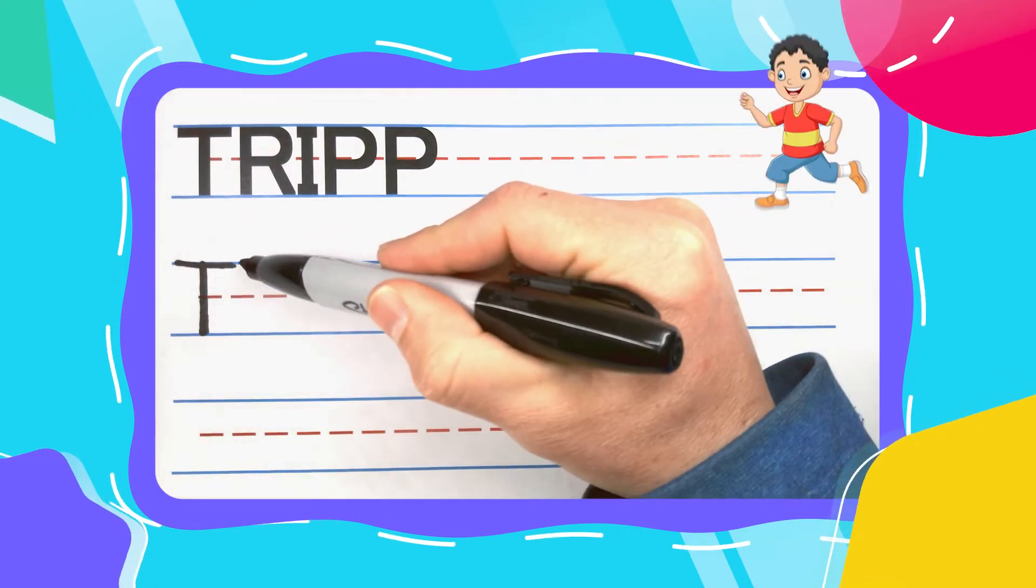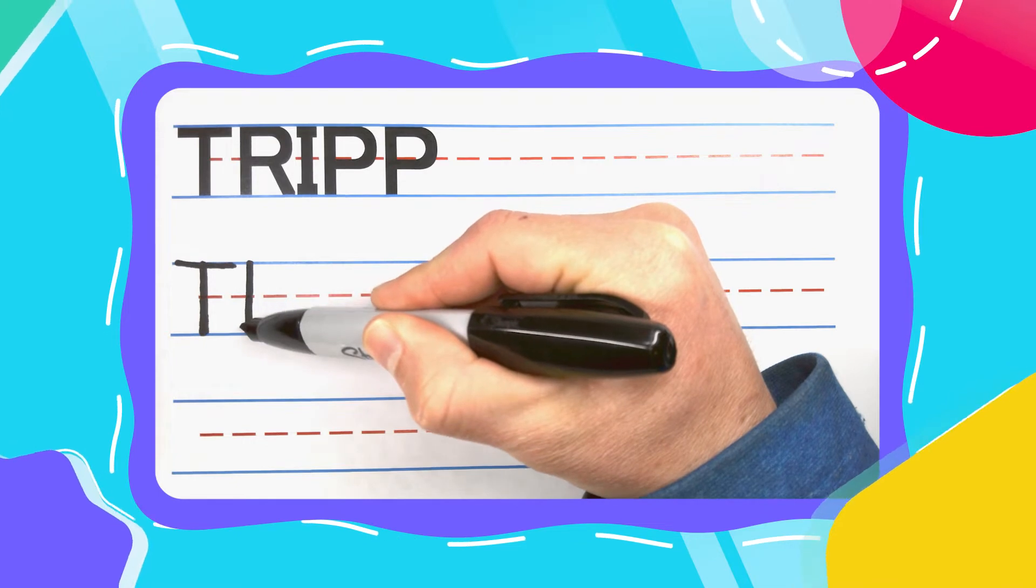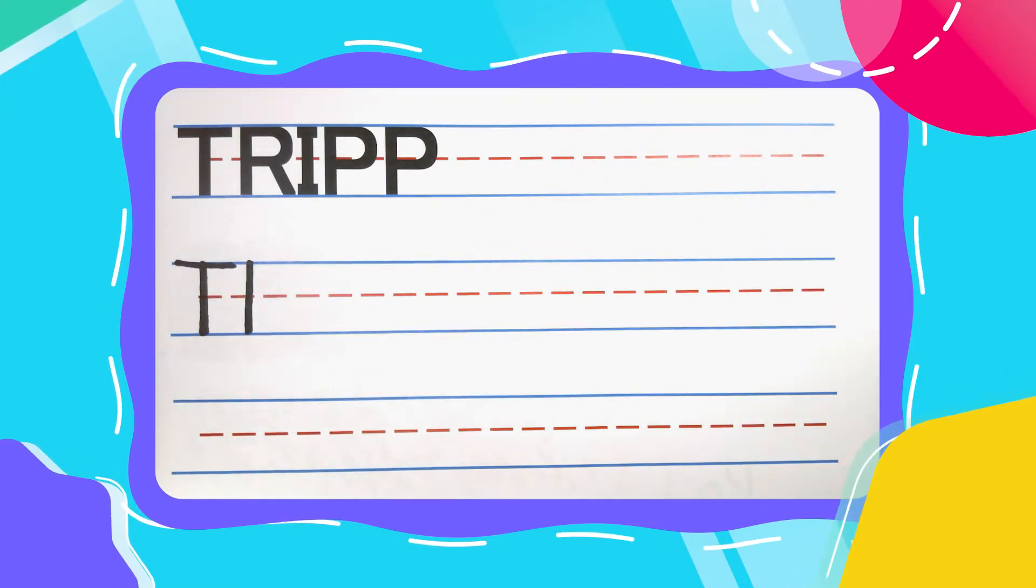The next letter is a runnin' R. Runnin' R's start with a straight up and down line. Come back to the top.